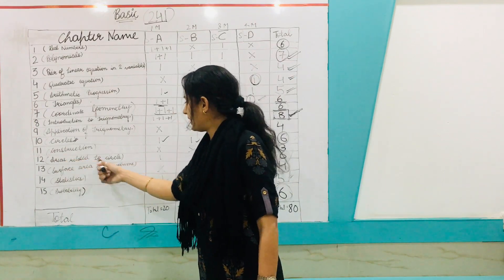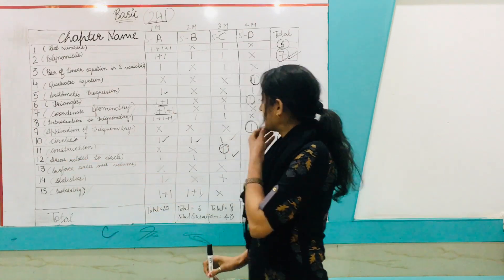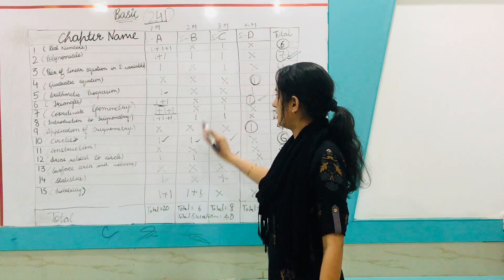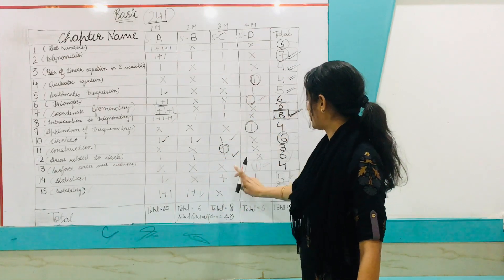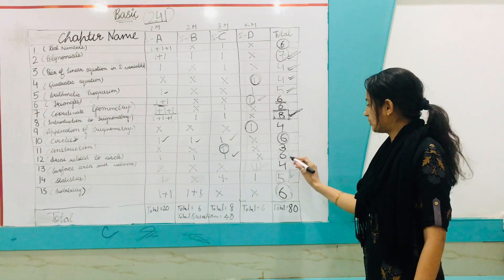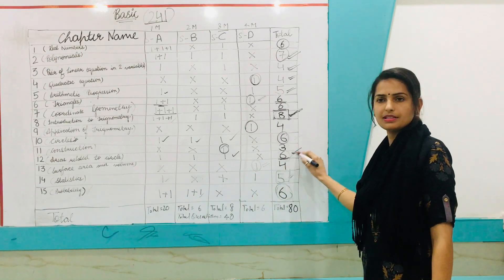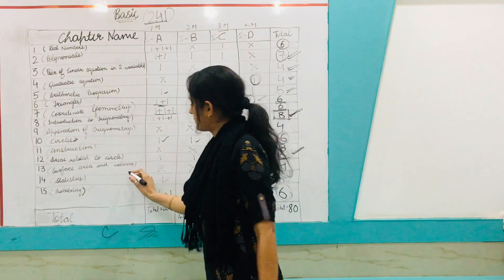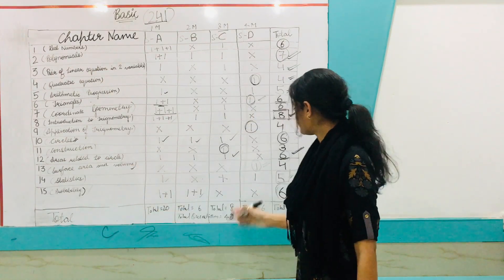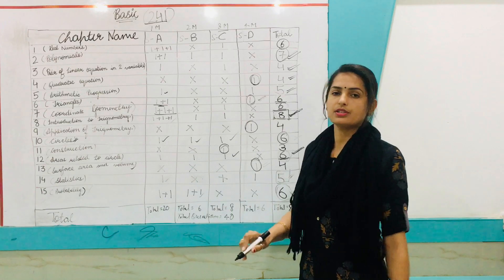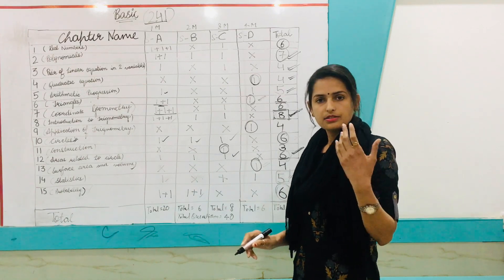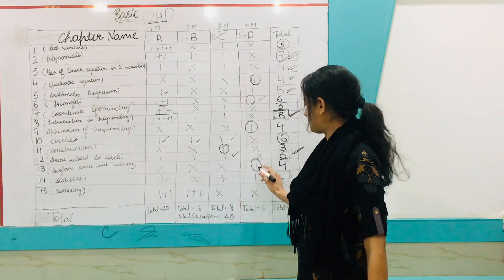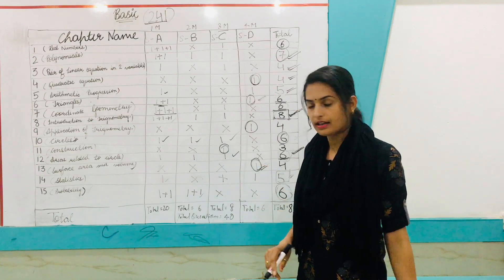Chapter 12, Areas Related to Circles — one question of one mark, one of two marks, and one of three marks, totaling six marks. This is also a very important chapter. Chapter 13, Surface Area and Volume — there will be only one question of four marks, so just focus on the last two exercises of this chapter.